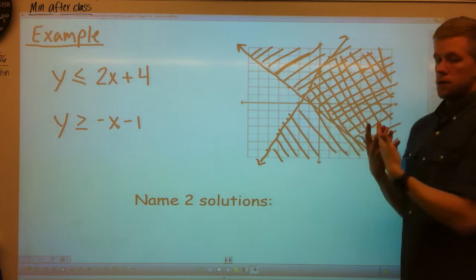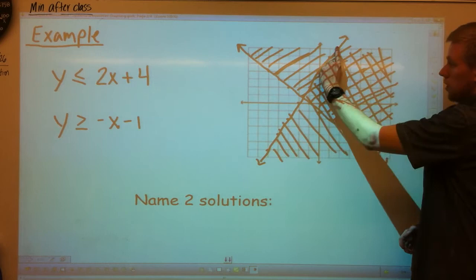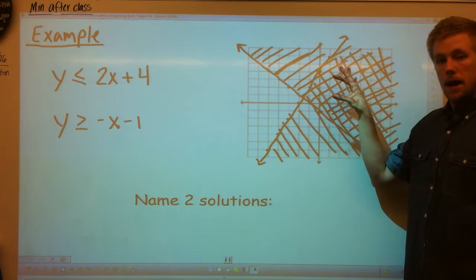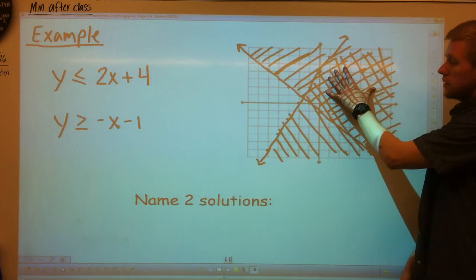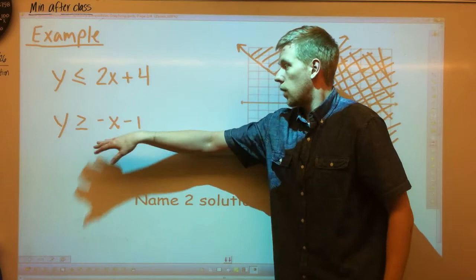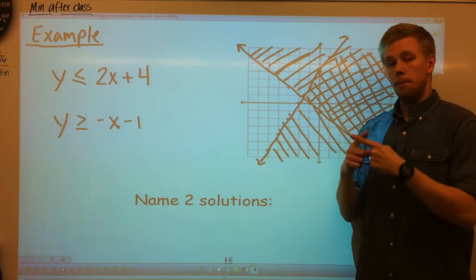And where these two regions intersect, where they both shade, so you can see I shade it below and then I shade it above. This region right here is my solution region. You can name any two solutions, any two ordered pairs to be your solution. So right now you need to pick two ordered pairs out of this solution region, and that would be your solutions. It would satisfy this equation and this equation.